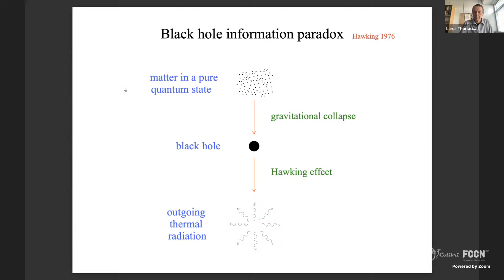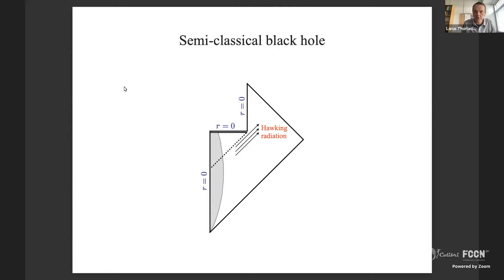Before I get there, let me remind you how one can formulate this paradox more precisely. Here's a Penrose diagram for a semi-classical description of this process. I've assumed spherical symmetry, so each point in the diagram has a transverse two-sphere. Infalling matter forms a black hole that will evaporate gradually, so there's some outgoing radiation.